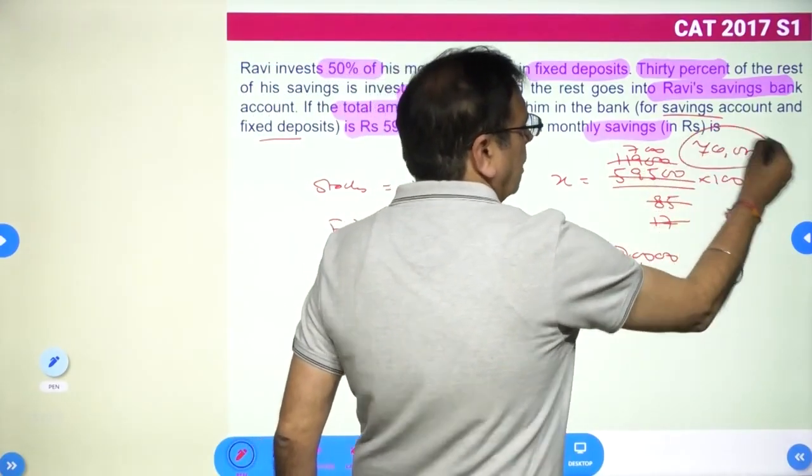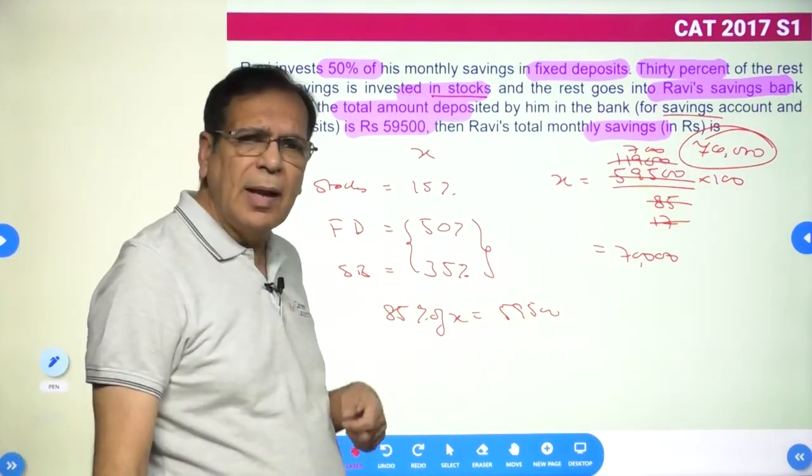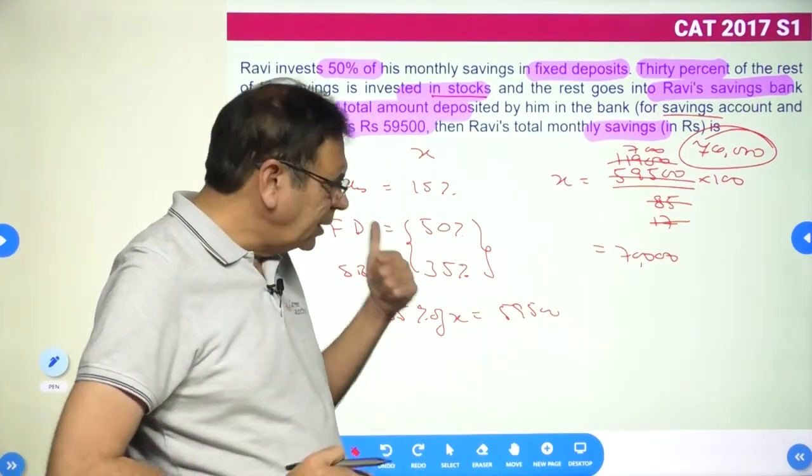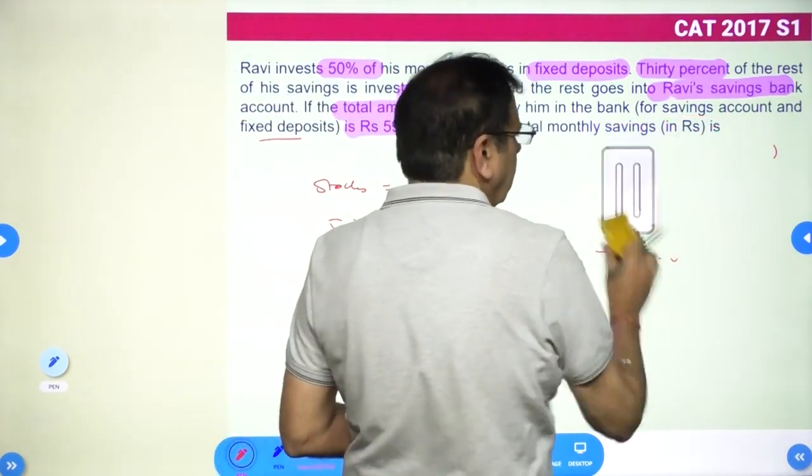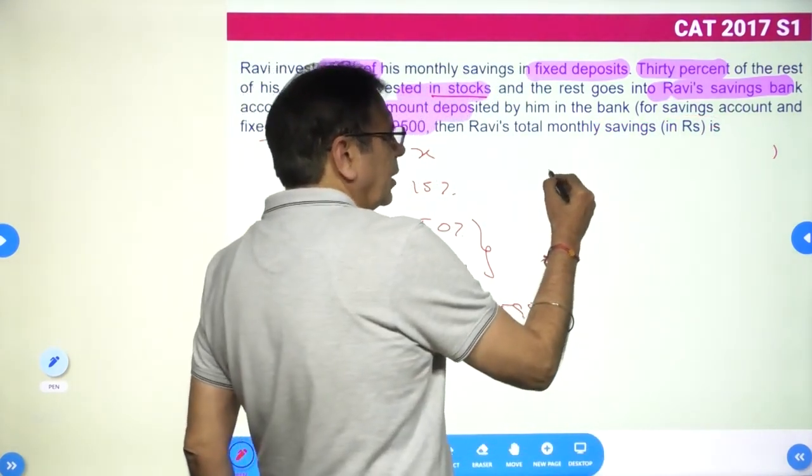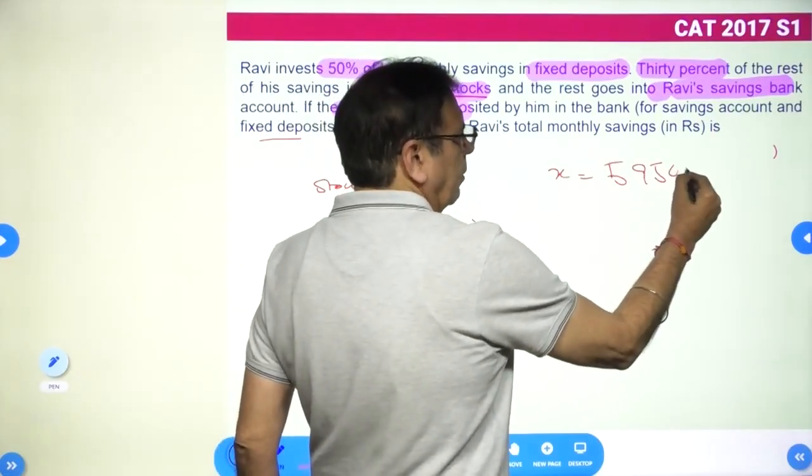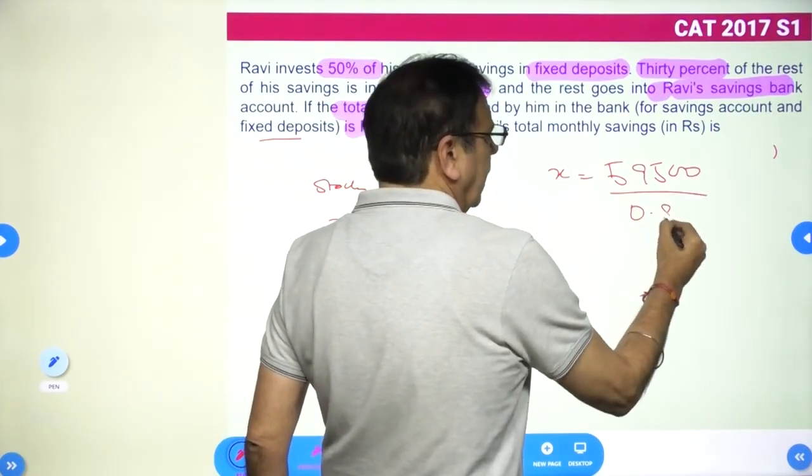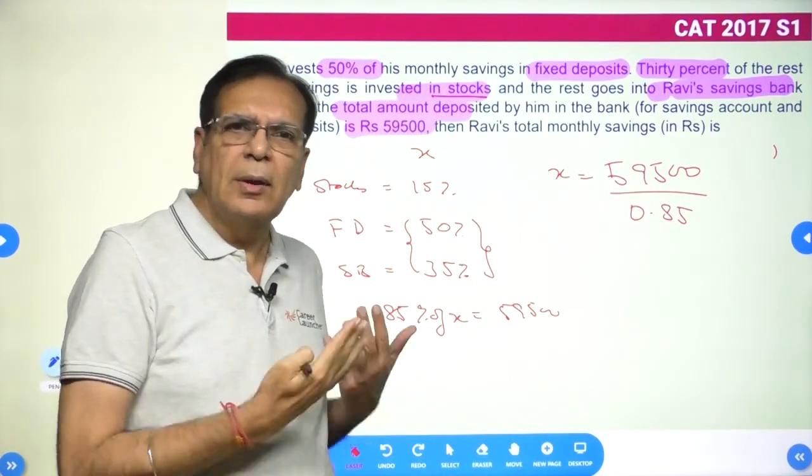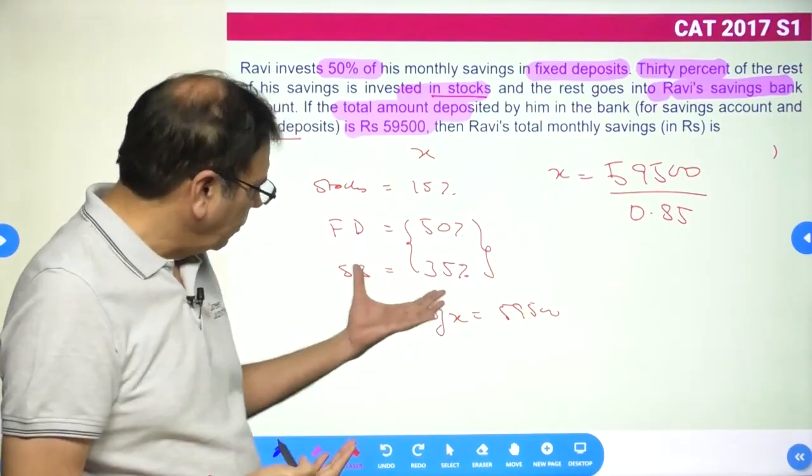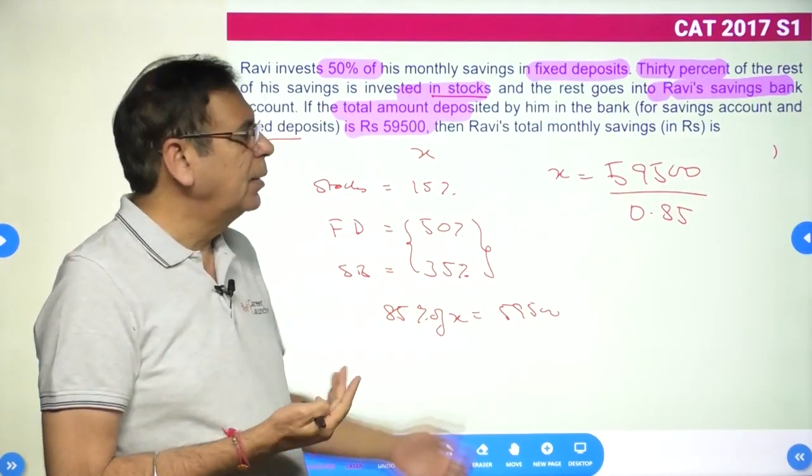For those of you not comfortable with calculation, in CAT you're allowed a calculator. All you need to do is state that X equals 59,500 divided by 0.85, calculate, solve, mark the answer. You don't have to do the calculation completely by writing down if you're not comfortable. In CAT you have that flexibility, so please use the calculator if required.